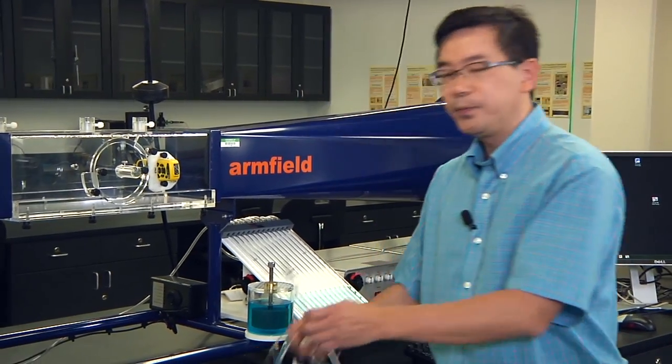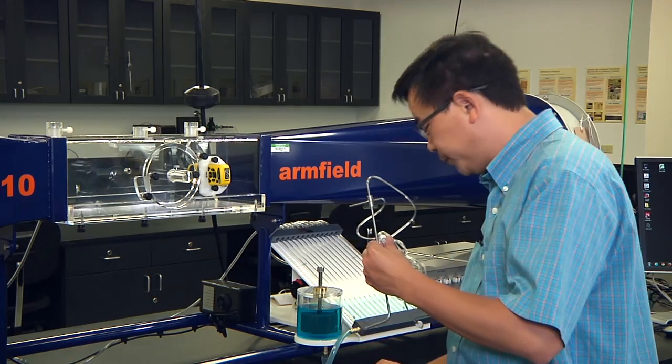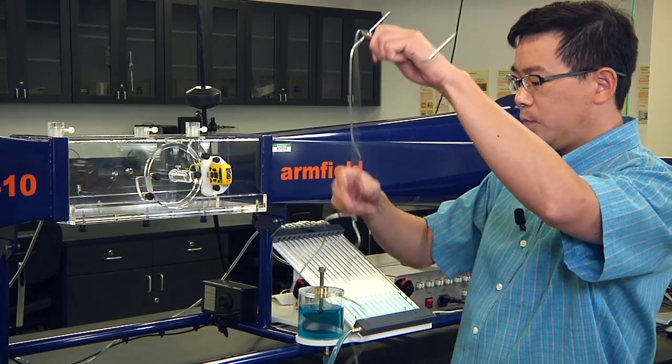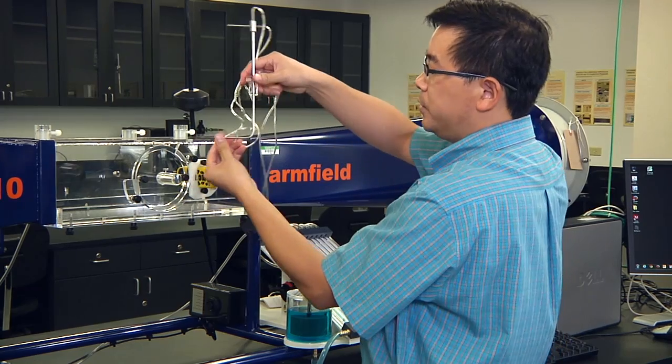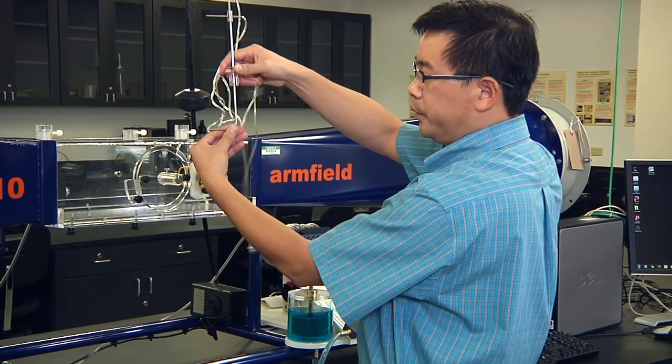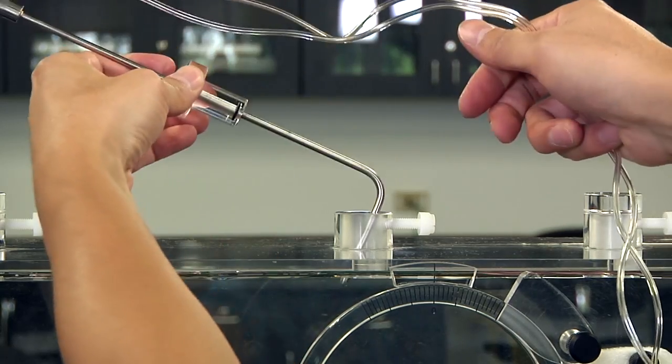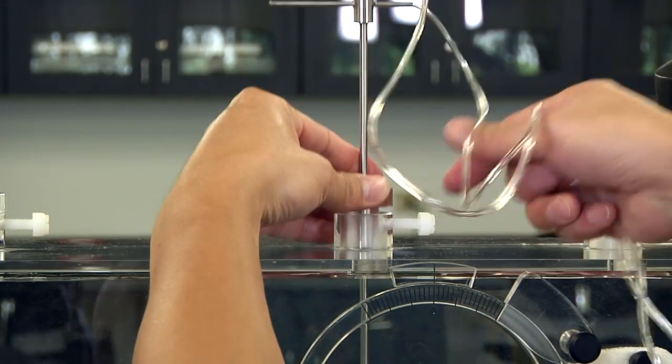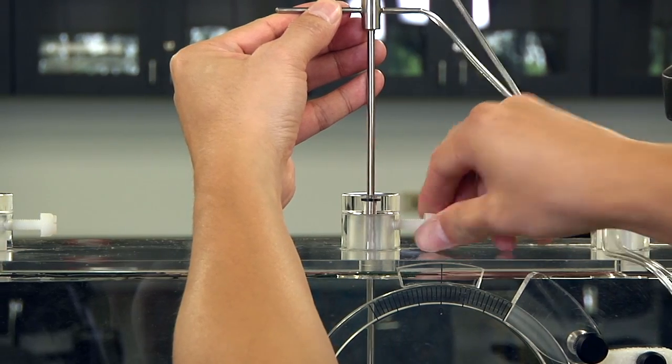Next, let's install the pitot static tube. Remove the middle cover. Carefully align the direction of the tube in the direction of the airflow. Lock the device.